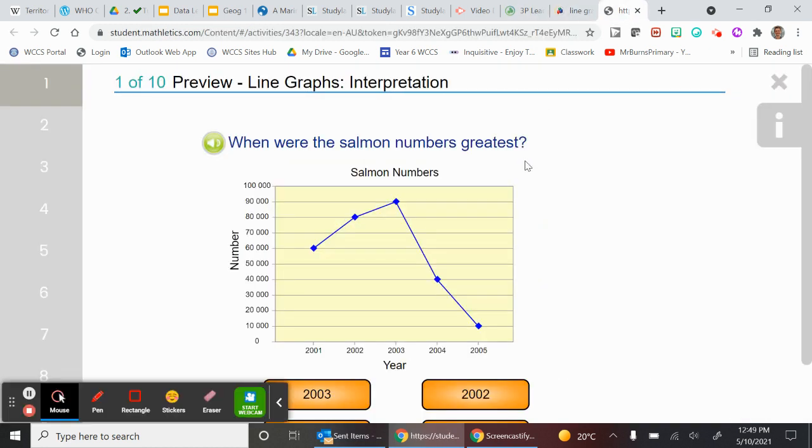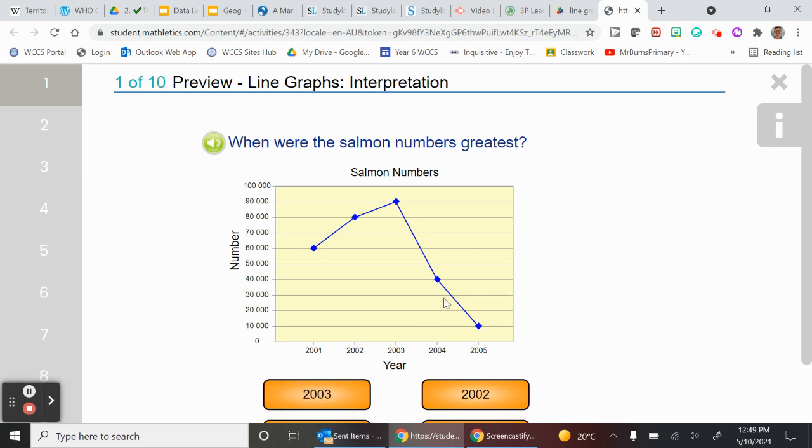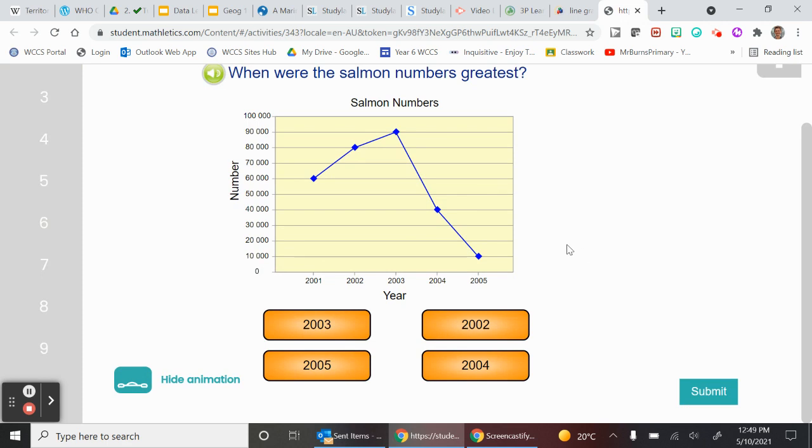Now let's go and have a look at the actual questions because I think they're a lot clearer for my poor eyes. This is looking a lot better. Let's do some work here. When were the salmon numbers greatest? So over here you've got your salmon numbers - it's a type of fish - and here's the years that they're measuring the fish levels.